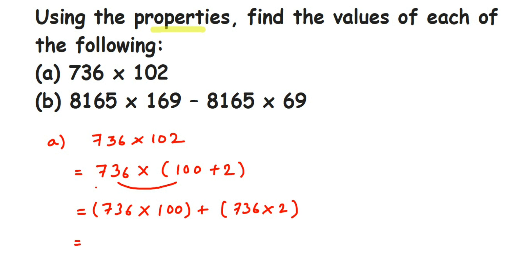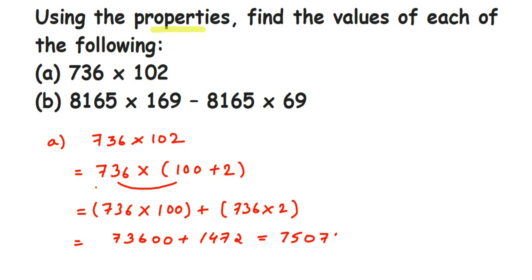So this equals 736 × 100, plus 736 × 2. When you multiply 736 by 100, you get 73600. When you multiply 736 by 2, you get 1472. Now add these two numbers and you will get 75,072. That's it — this is the distributive property applied.